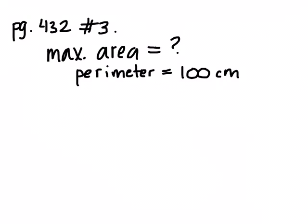This question wants you to find the maximum possible area — this is what we don't know — if the perimeter is 100 centimeters. Which shape will always produce the maximum possible area? The square is always going to produce the maximum, the greatest area, and the least perimeter. So we're given the perimeter and we want to know what is the maximum possible area of the square.